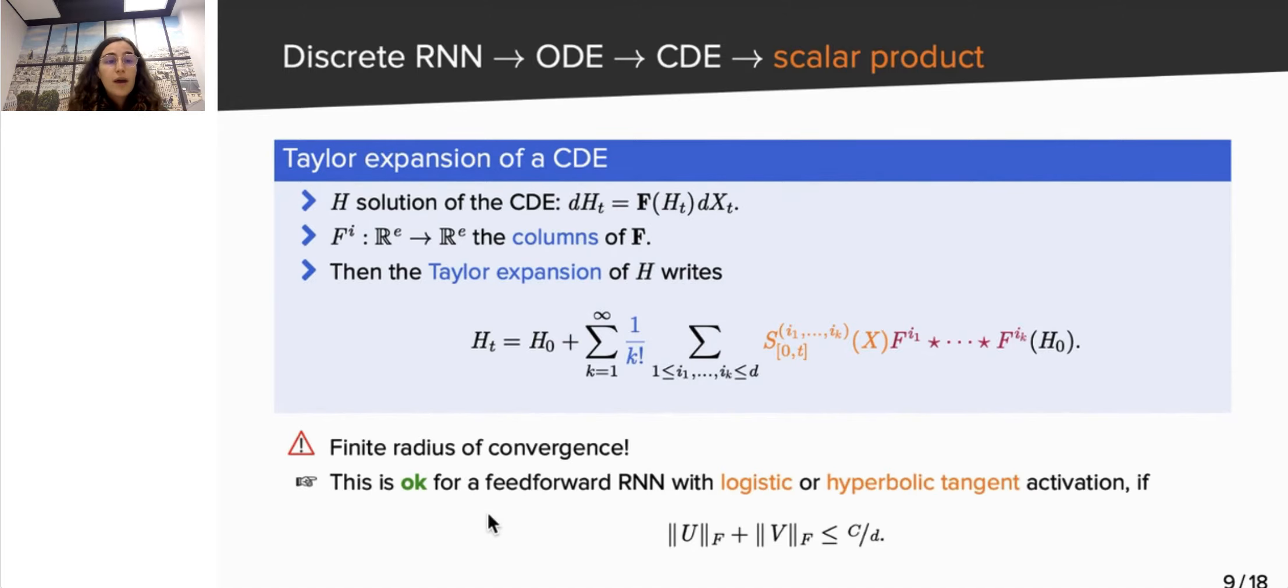So, we need to ensure the convergence of this infinite sum. This is highly non-trivial, and we show it in the paper for feedforward RNN, with logistic or hyperbolic tangent activation, under a condition on the norm of the weight matrices. This condition might seem restrictive, but in practice, we verify empirically the convergence, even when it is not met.